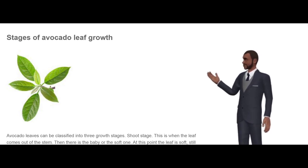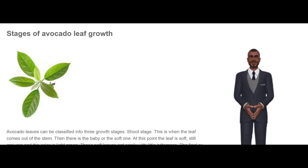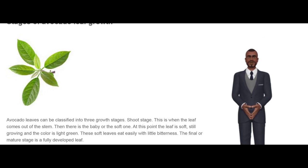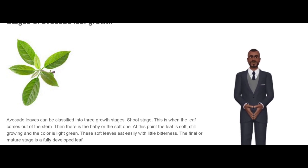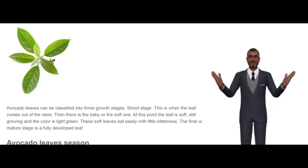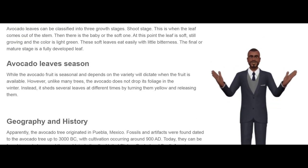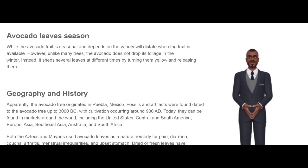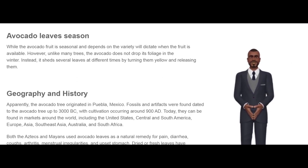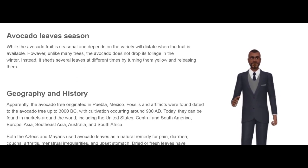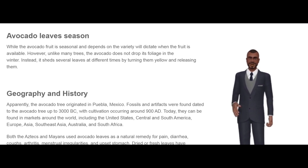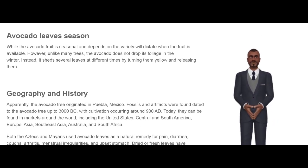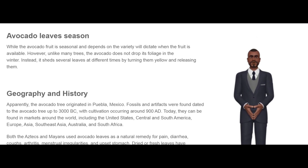The final or mature stage is a fully developed leaf. Avocado Leaf Season. While the avocado fruit is seasonal and the variety will dictate when the fruit is available, unlike many trees, the avocado does not drop its foliage in the winter. Instead, it sheds several leaves at different times by turning them yellow and releasing them.